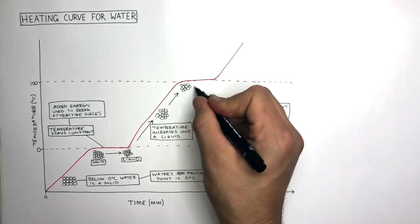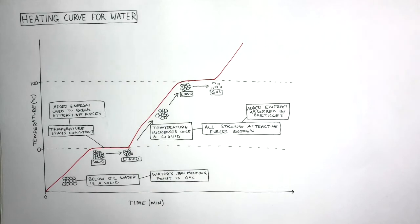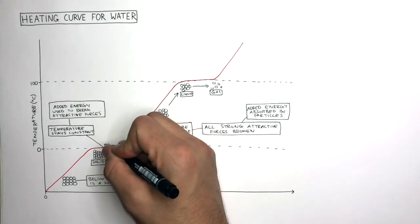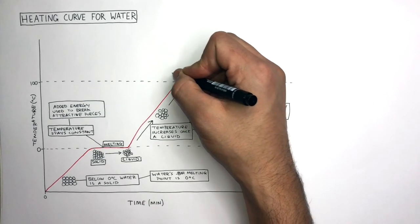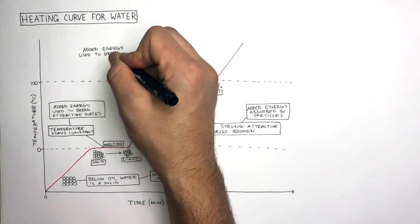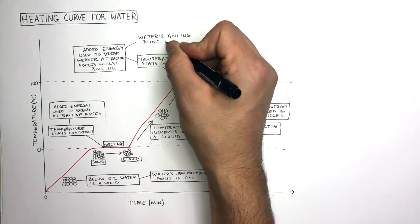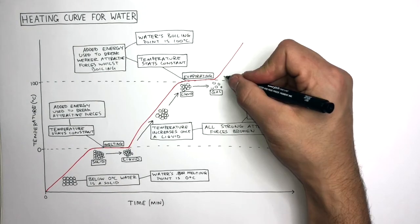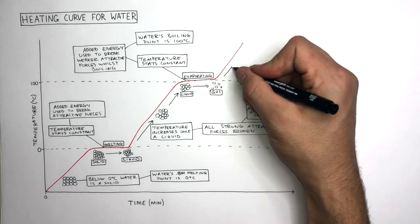As the liquid continues to absorb more heat energy, it starts to turn into a gas. The horizontal line on any heating curve always represents a state change — here it's melting and here it's evaporating. As the water evaporates into water vapor, the temperature remains constant. This is because the added energy is used to break the weaker attractive forces whilst boiling takes place. Water's boiling point is 100 degrees Celsius. Only once all the weak attractive forces between the water molecules have been broken by the added energy can the temperature of the gas then start to increase.